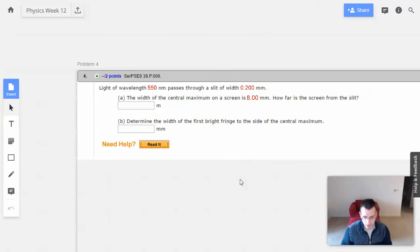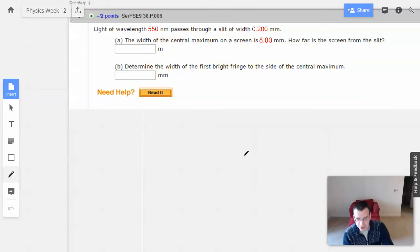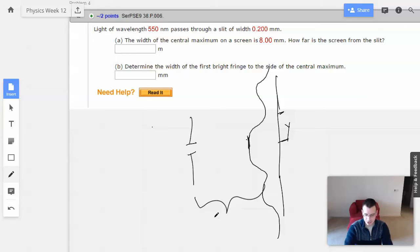Alright, so first thing we're going to do is draw a picture. So we have a single slit right here. We have a screen right here of some mystery distance. And it's going to have a wavelength like this. This is single slit, mystery distance D, aperture size A.